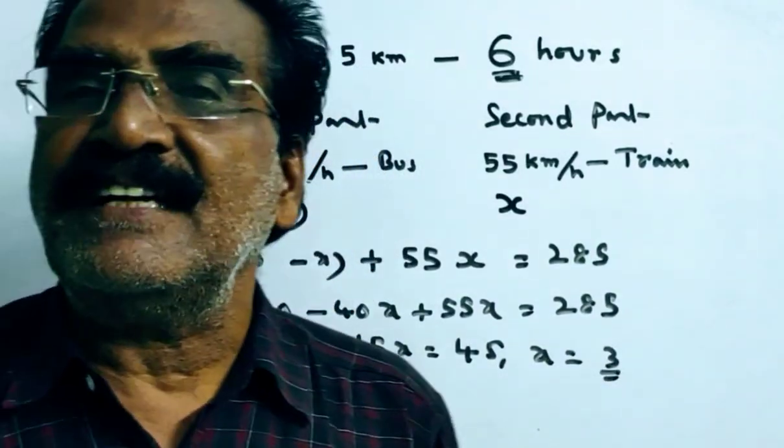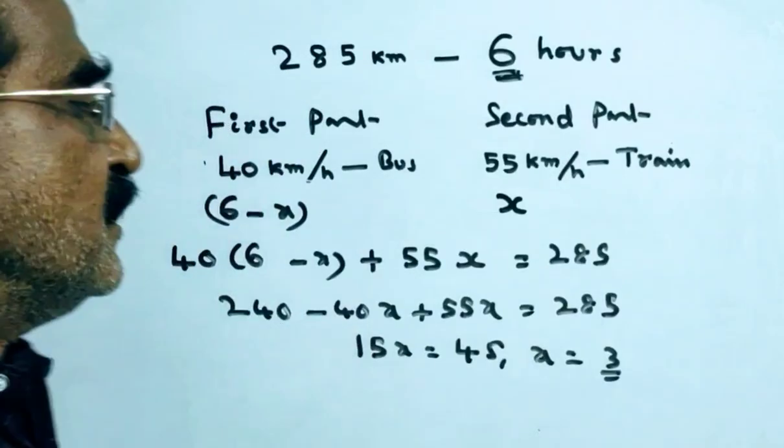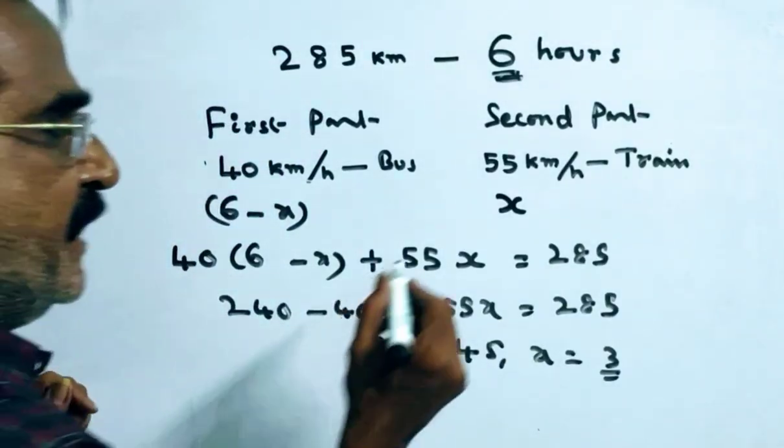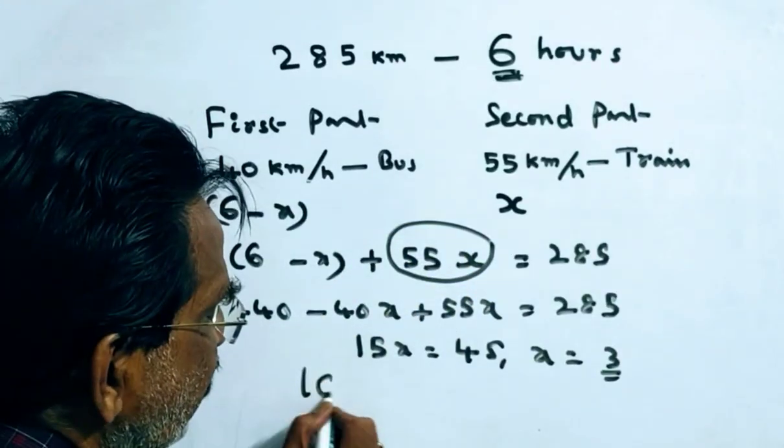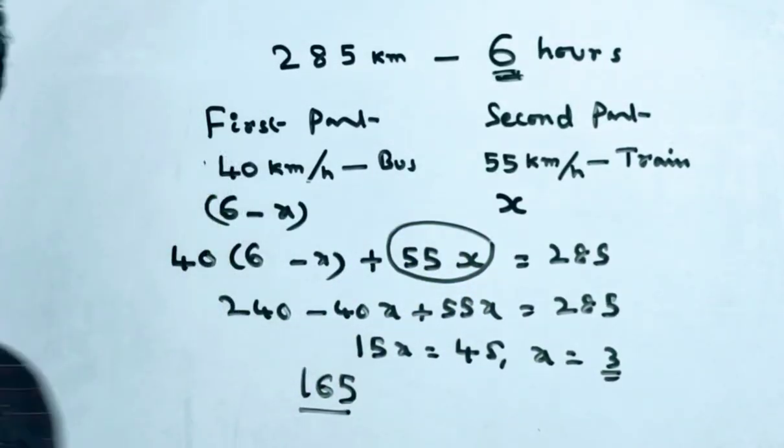He traveled 3 hours by train. So now the distance traveled by train is equal to 55x, 55 into 3, which is 165 km, the distance traveled by train.